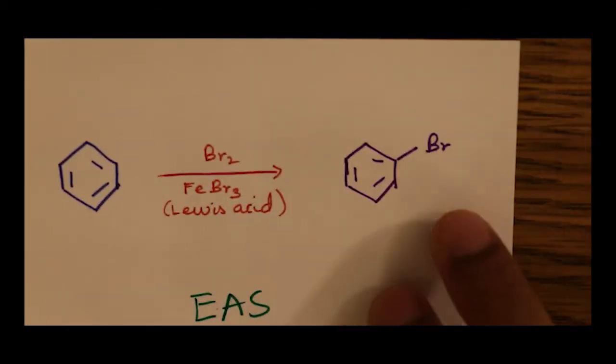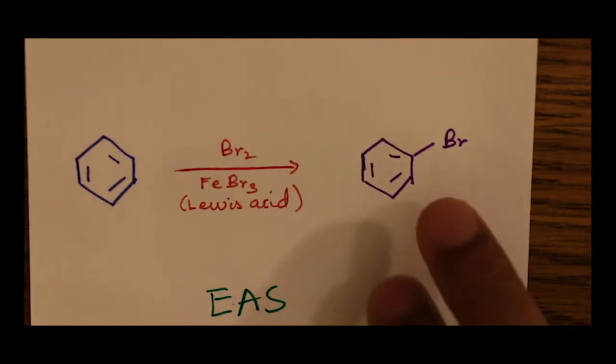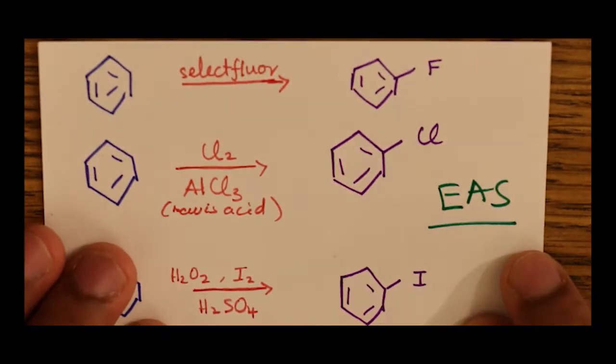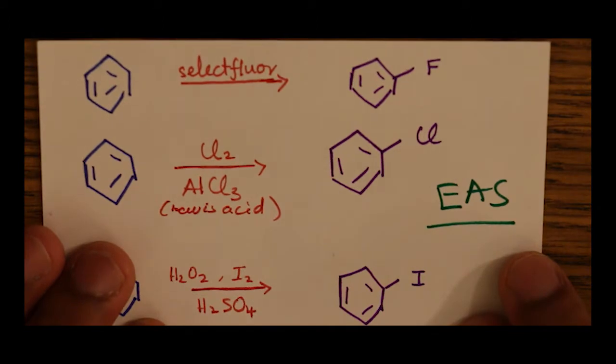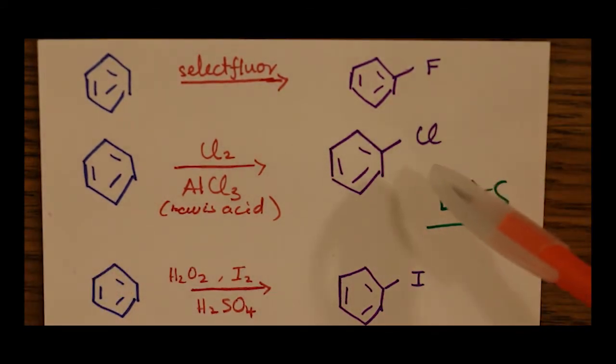This reaction is known as bromination. Similarly, we have EAS reactions for the other halogens: fluorine, chlorine, and iodine.